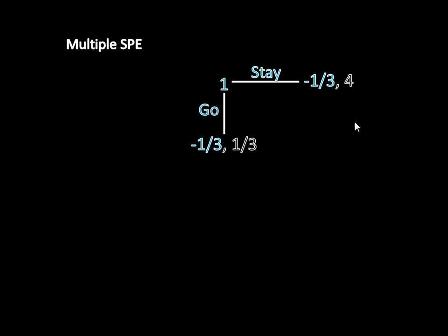The important takeaway is that what causes multiple subgame perfect equilibria is this indifference — Player 1 is exactly indifferent between staying and going, both yielding -1/3. If the payoffs were just slightly different — say, -0.33 instead of -1/3 — then go would be strictly better, and we'd have a unique equilibrium. It requires exact indifference to get multiple subgame perfect equilibria, and having exactly equal payoffs like this is really rare, which is why you'll most of the time not encounter games with multiple subgame perfect equilibria.